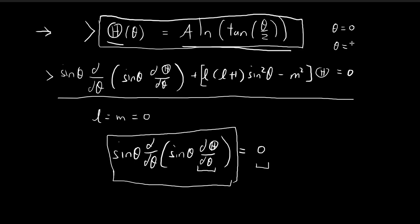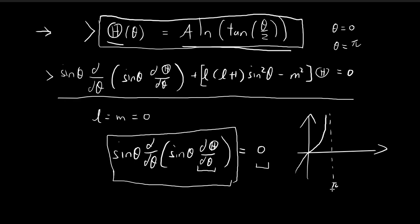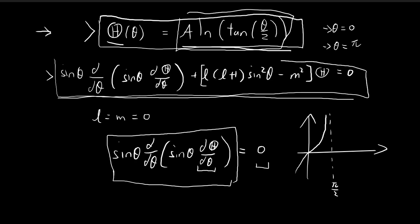There are also problems when θ equals π. When θ equals π, you have tangent(π/2). From the tangent graph, tangent tends towards infinity when the argument equals π/2. So you have natural log of infinity, which is also infinity. For both of these cases, you get behavior that will not allow you to normalize this capital Theta. So mathematically it is a solution, but in physics these are useless solutions because they're not normalizable.